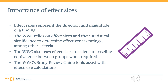During the course of a study review, the WWC may calculate an effect size at two different points. First, when applicable, the WWC may calculate effect sizes to assess the magnitude of baseline differences between the intervention and comparison groups. Second, the WWC will calculate effect sizes when estimating and reporting on the effects of the intervention, which then impacts the study or intervention's effectiveness rating.